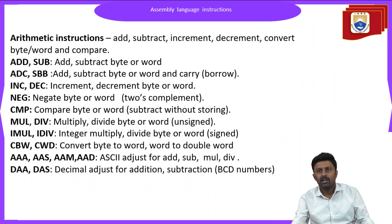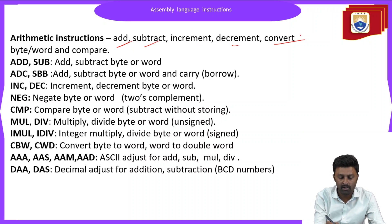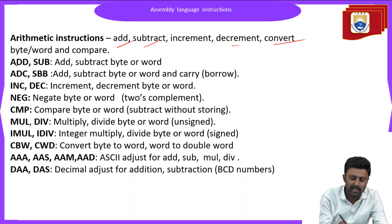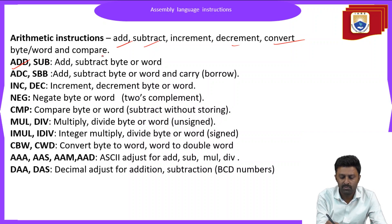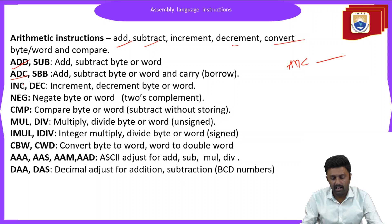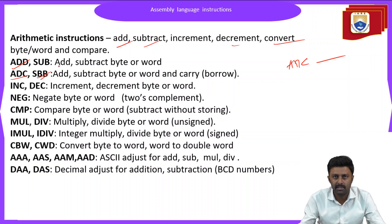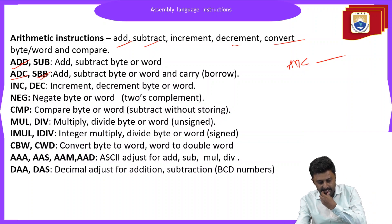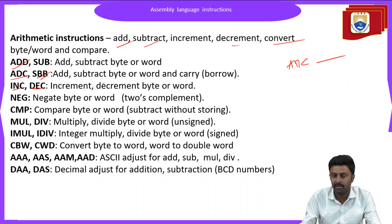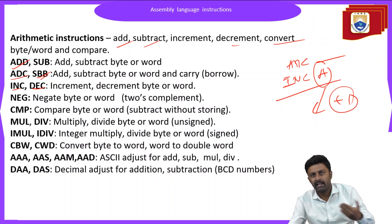Now we will see examples of arithmetic instructions. We have seen ADD, SUB, increment, decrement, and convert — all examples of arithmetic instructions. The ADC instruction stands for addition with carry: writing ADC with operands will add the contents of the two operands along with the carry. The SBB instruction is used for subtracting two numbers with borrow. The INC (increment) and DEC (decrement) instructions are used to increment or decrement a register by 1 — for example, 'INC A' increments the content of register A by 1.